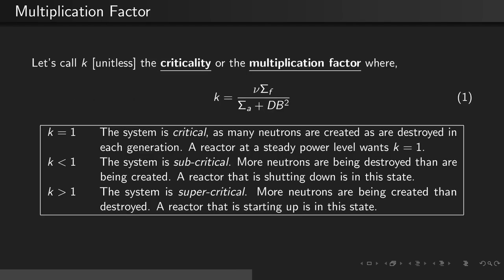When k equals 1, the system is exactly critical. As many neutrons are created in each generation as are destroyed. A reactor at a steady state power level wants k equals 1.